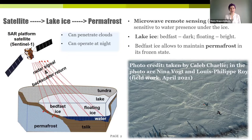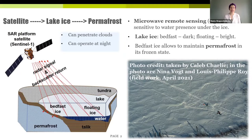The number of lakes in Arctic and sub-Arctic regions is vast, so we have to resort to remote sensing for monitoring. Microwave remote sensing, specifically synthetic aperture radar, allows us to distinguish between bedfast and floating ice from space. The satellite platform sends out a signal and listens to the backscatter. For floating ice, the signal bounces back from the water-ice interface, giving a bright signature on a grayscale SAR image. For bedfast ice, the signal is generally absorbed or transmitted into the sediment underneath the lake, giving a dark signature. SAR can also penetrate clouds and operate at night, which makes it really suitable for northern regions.